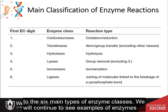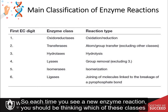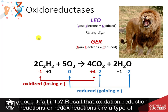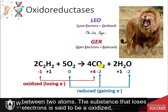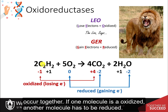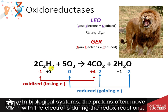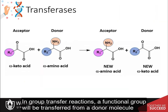In Chapter 6, we were introduced to the six main types of enzyme classes, and we will continue to see examples throughout this term and next term. Recall that oxidation-reduction reactions, or redox reactions, involve the transfer of electrons between two atoms. The substance that loses electrons is oxidized, while the substance that gains electrons is reduced. Redox reactions always occur together — if one molecule is oxidized, another must be reduced. In biological systems, protons often move with the electrons and can be used to identify this reaction type.